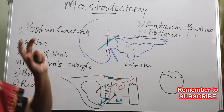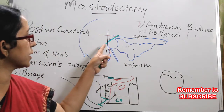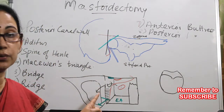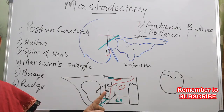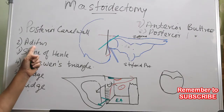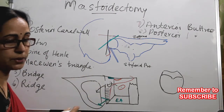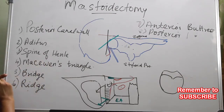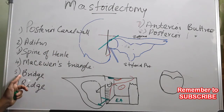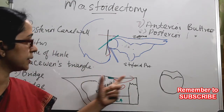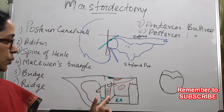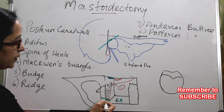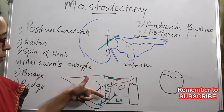To summarize: the posterior canal wall is the common boundary between the external auditory canal and the mastoid or middle ear. The aditus is the connection between the middle ear and the mastoid. The spine of Henle is a projection from the posterior canal wall. MacEwen's triangle boundaries are as described. The bridge is the part of the posterior canal wall overlying the aditus or notch of Rivinus. The ridge overlies the vertical part of the facial nerve. And then there is the anterior buttress and the posterior buttress.